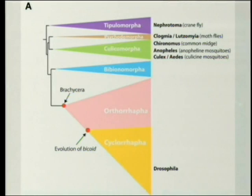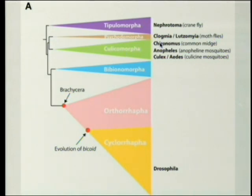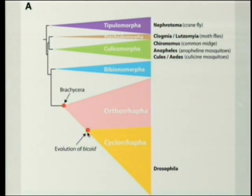There's the standard evolutionary branch that you'd expect. Crane flies come off early on, then you have Clogmia and Lutzomyia, which are moth flies, then Chironomus, which is common midge, and Anopheles and Culex and Aedes. And then, of course, Drosophila, which has bicoid.